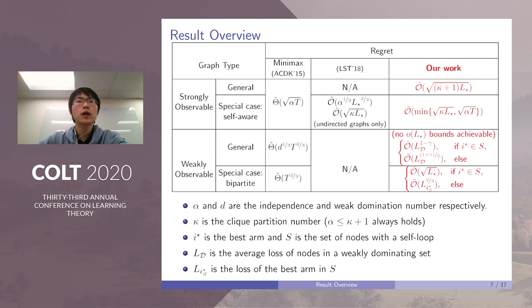For complete bipartite graphs, we can do even better. We derive bounds with respect to the loss of the best arm in S. Again, there are two cases. If the best arm is in S, the regret is √(L*). And otherwise, the regret is the loss of the best arm in S to the two-thirds power.